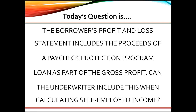For example, if the profit and loss statement shows a gross profit of $90,000, which includes $10,000 in proceeds from a PPP loan, the gross profit would be calculated as $90,000 minus $10,000 equals $80,000. $80,000 would be the gross profit used by the underwriter to calculate income.